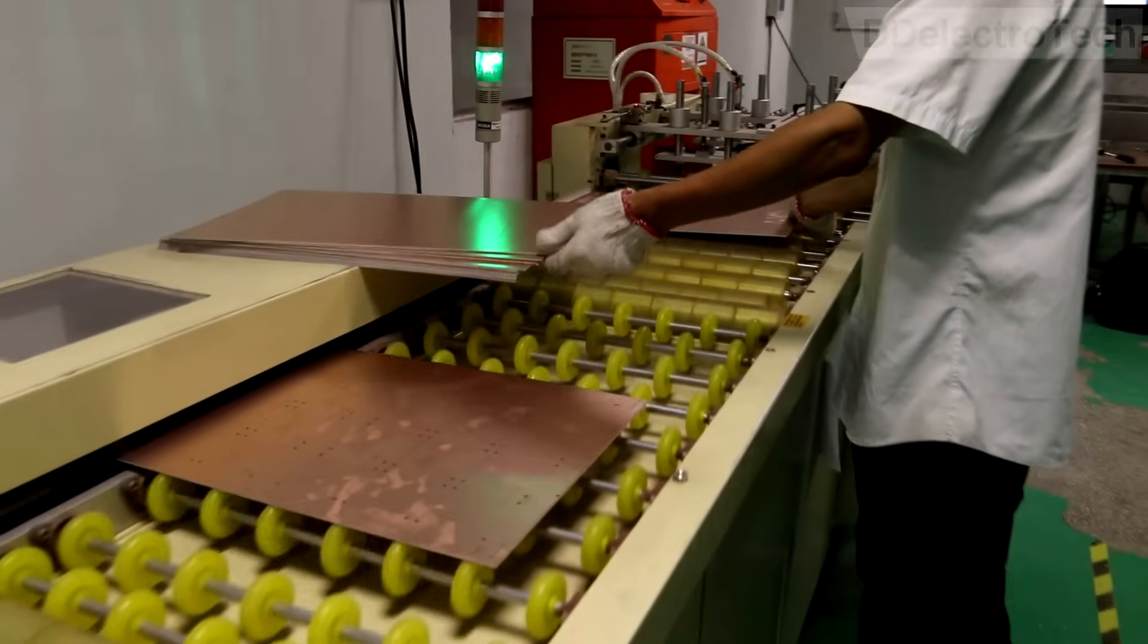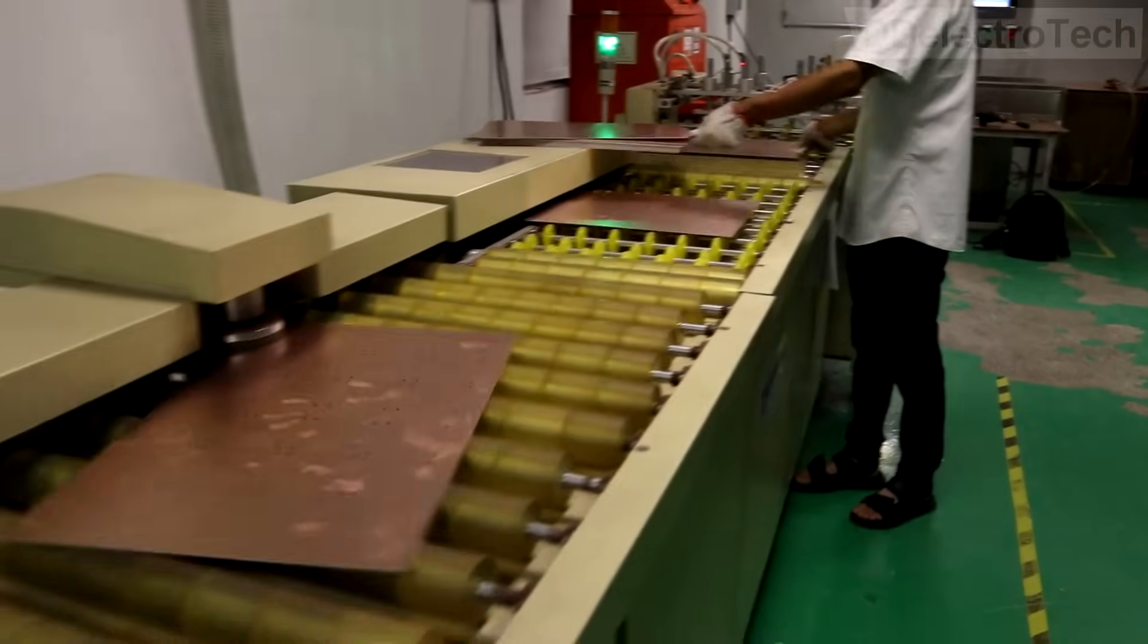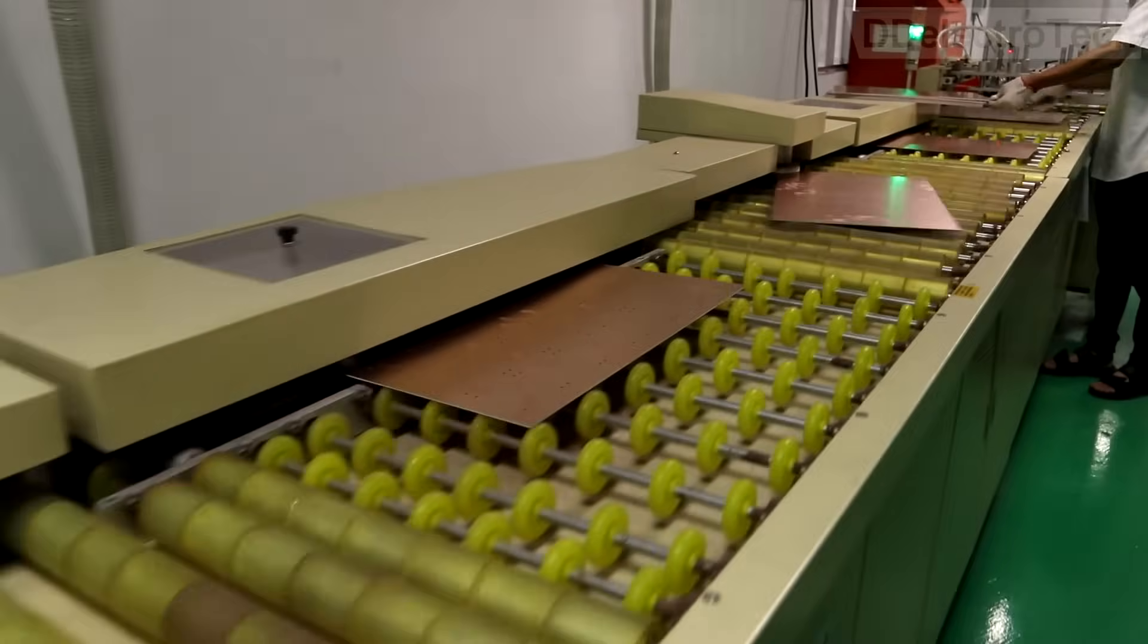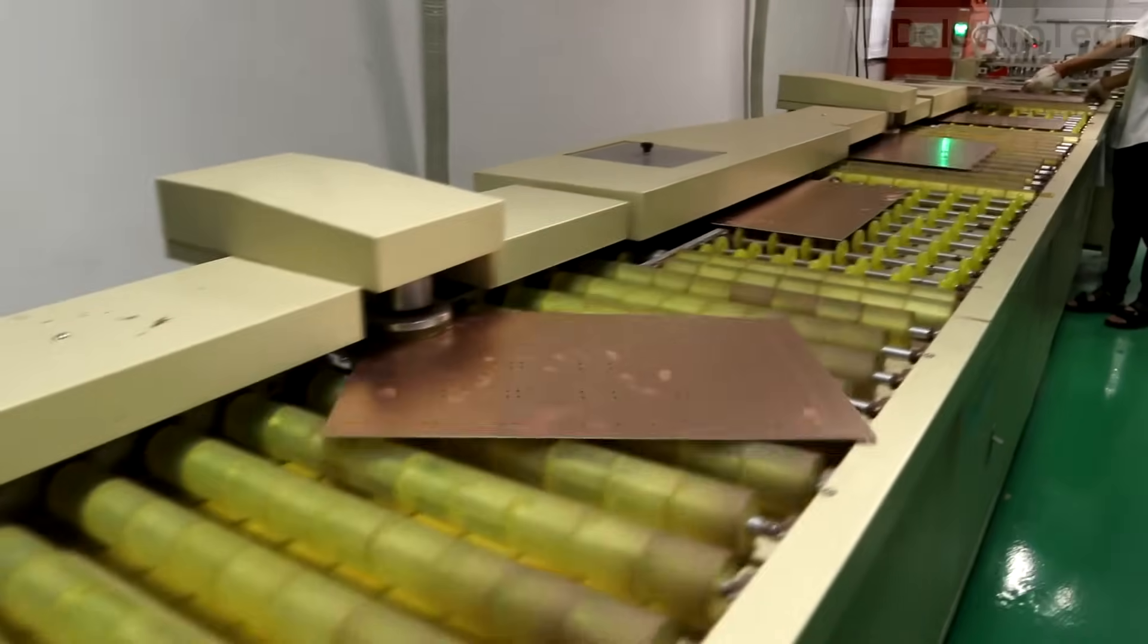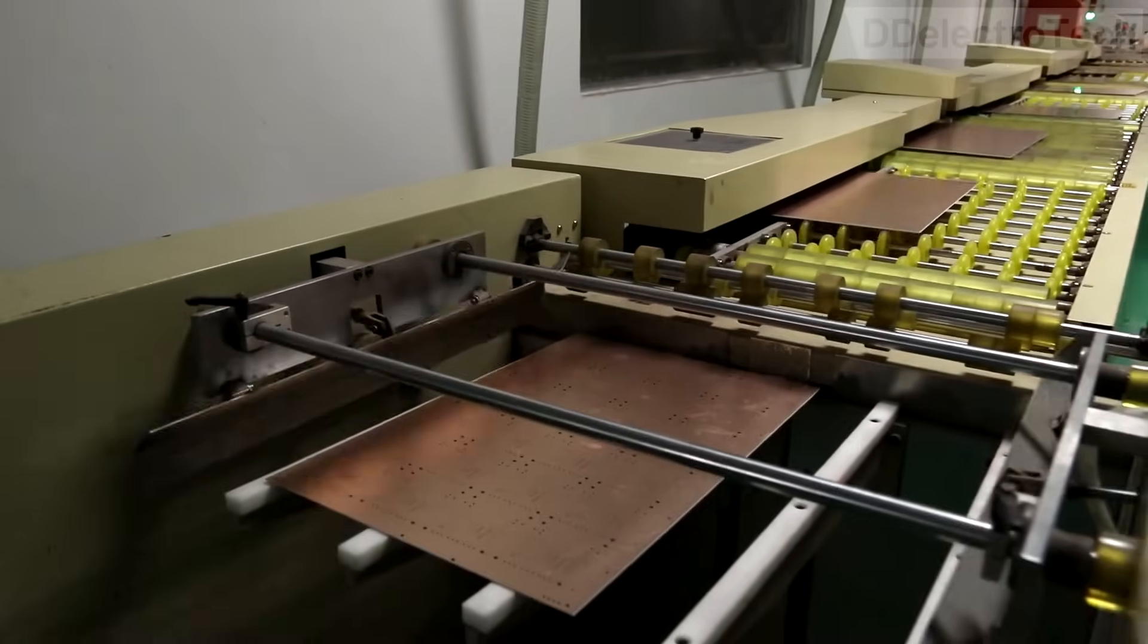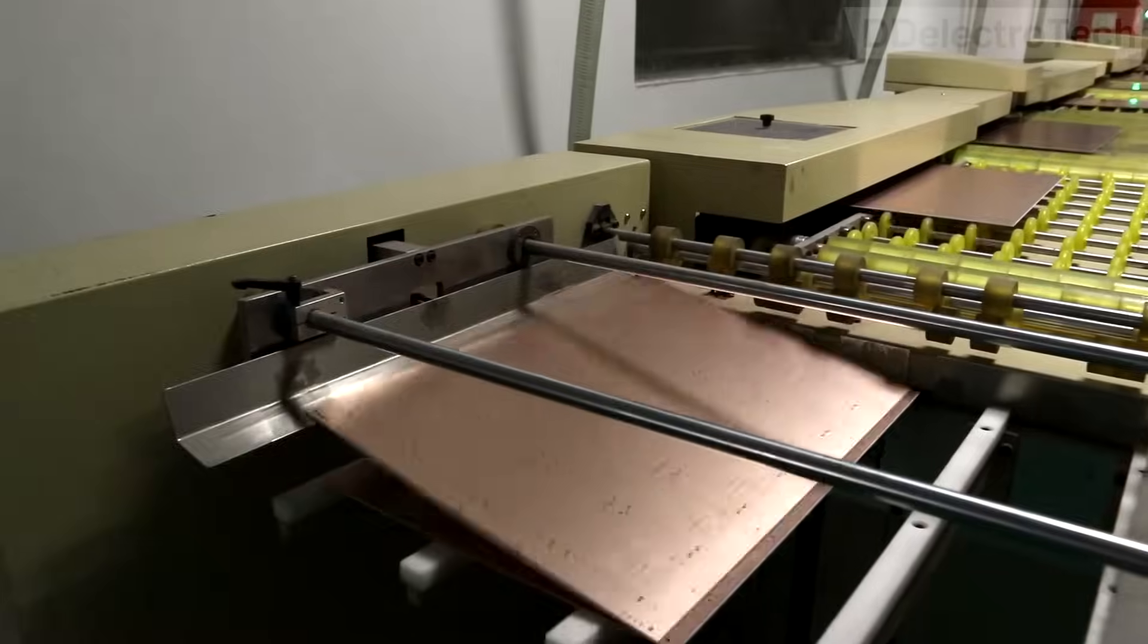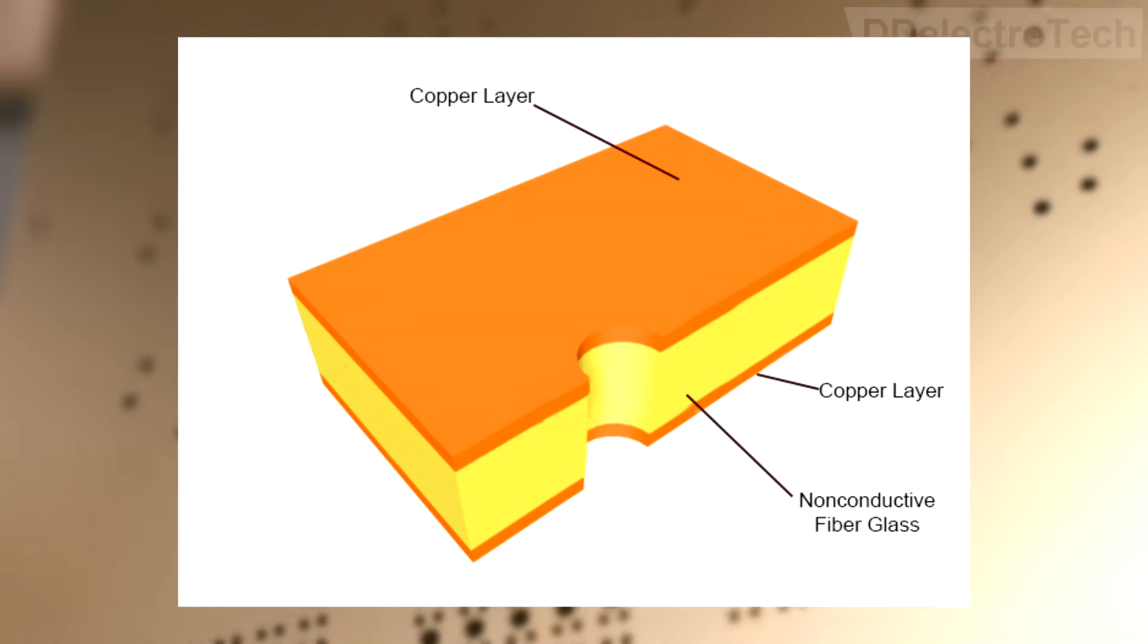The machine automatically smooths the edges of the boards, one side at a time. As the board has been drilled for making connections between top and bottom layers, but the middle layer is non-conductive fiberglass, so to make connections between top and bottom, the board comes for electroplating.